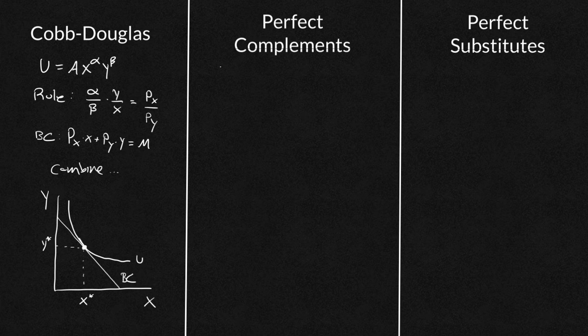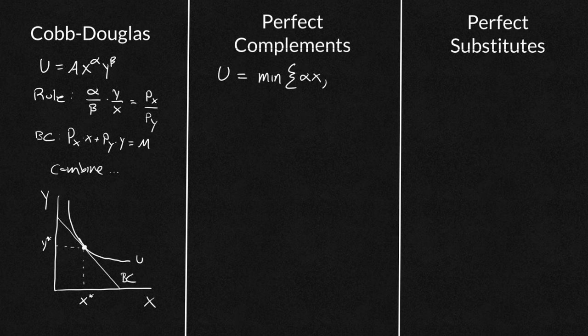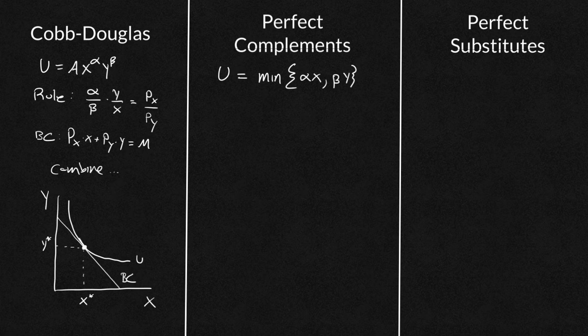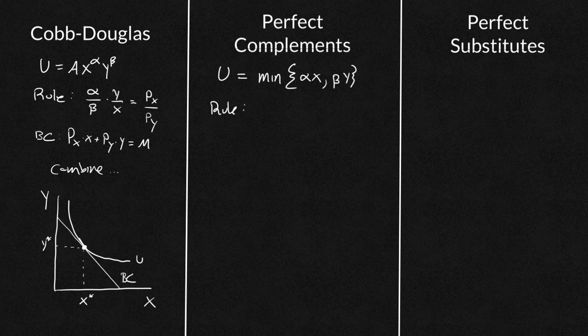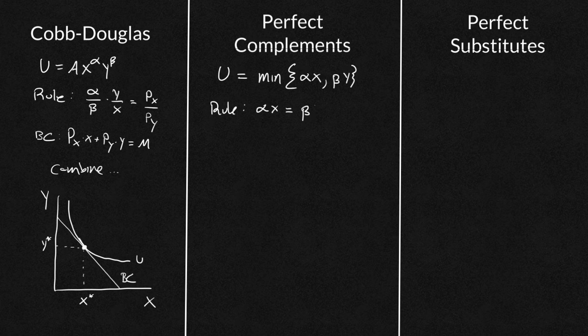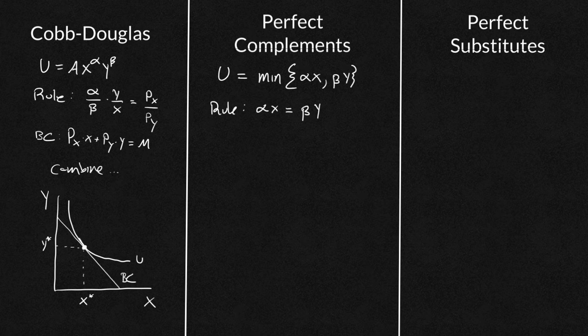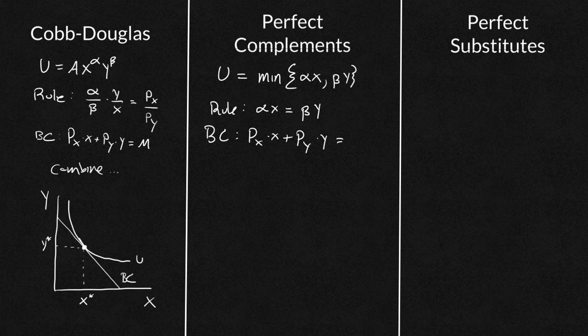Now perfect complements, you're going to have a utility function that looks something like this, you're going to have a minimization function where you'll have let's just say some alpha times X, some beta times Y, you could also have a constant in front of it, which won't change anything here. Your rule, again, this idea of a rule is how are we going to combine, how are we going to choose between the two items, what's my optimal, what's my optimization rule. And here, you're always going to set alpha X equal to beta Y, because you're always going to have that combination.